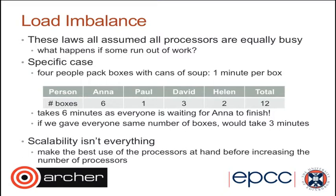Thinking about scalability: with one person it takes 12 minutes; with four people unevenly loaded it takes 6 minutes, giving a speed-up of 12/6 = 2 for four processors, which is 50% parallel efficiency. But if we had distributed the work evenly, we'd get a speed-up of 12/3 = 4, which is ideal scaling. The take-home message is to make the best use of the processors at hand before increasing the number of processors — all processors should be working equally hard.